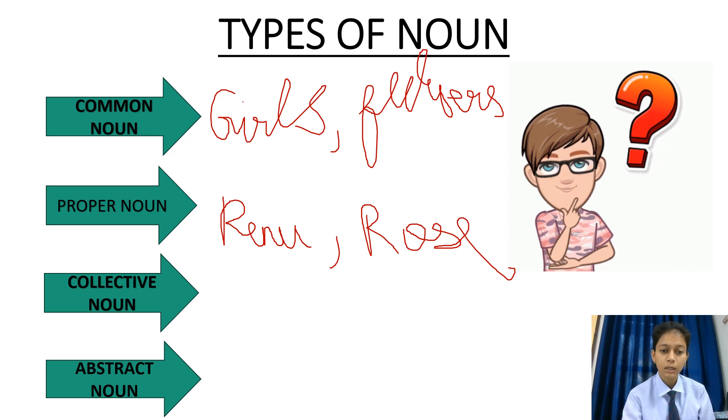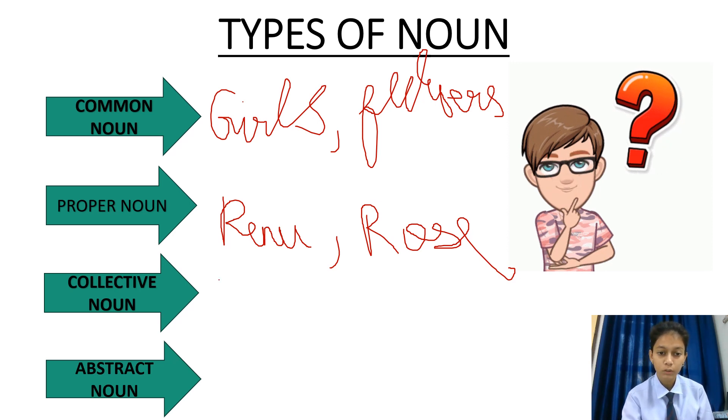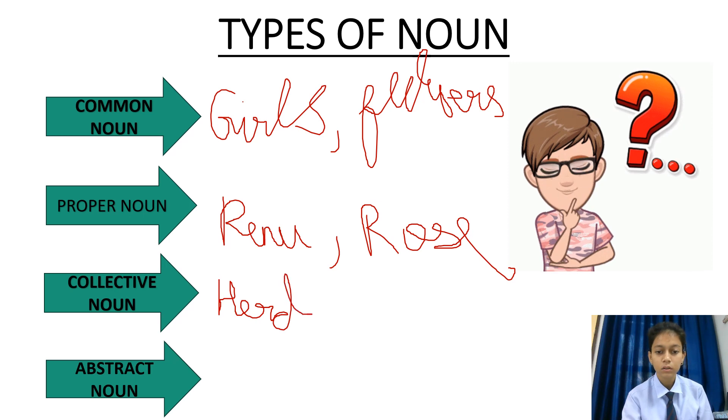Collective noun. Collective noun is group of a noun. Group of students, group of animals. Group of animals. Cows.